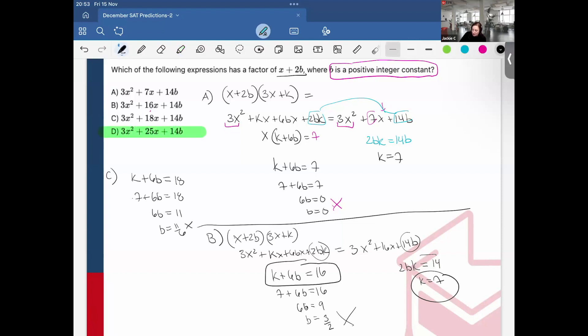But just to show why D would be our answer. Again, k + 6b = 25. 7 + 6b = 25. 25 minus 7 is 18. And b = 3. This is the only answer choice that gave me a positive integer constant. The rest gave me either zero or fractions. So that's why it's D. I would know this problem. It's already come up on multiple SAT exams.